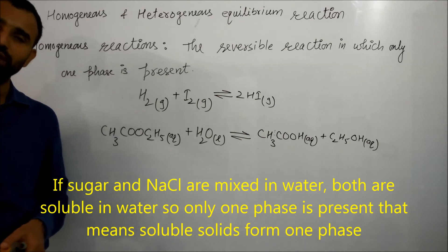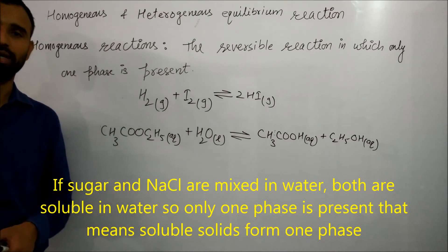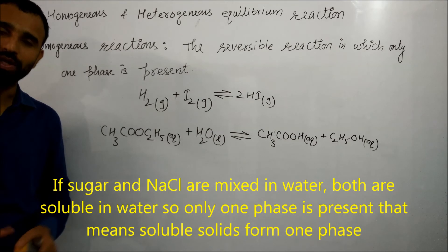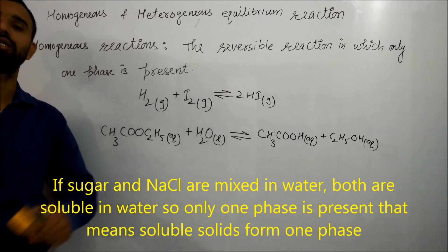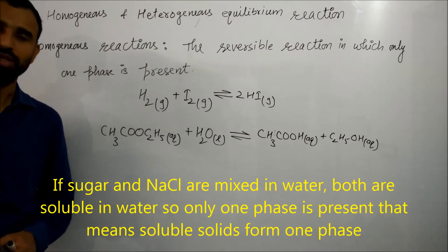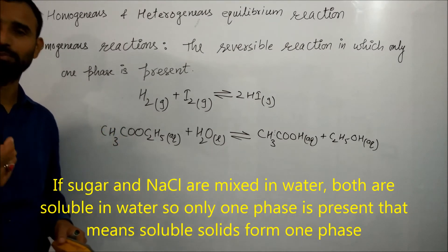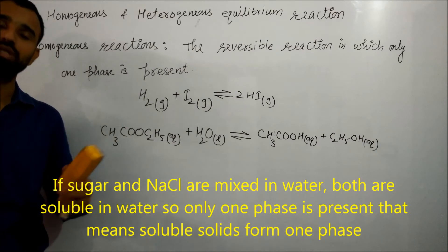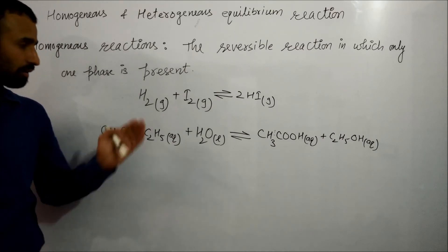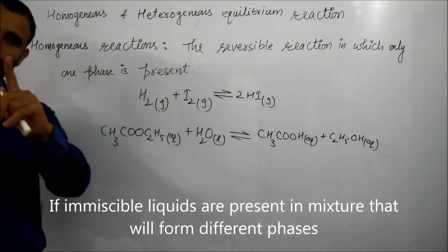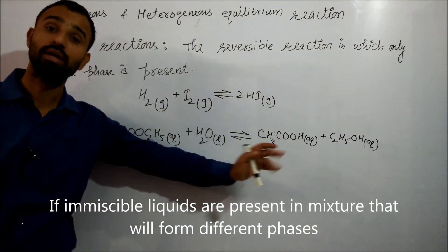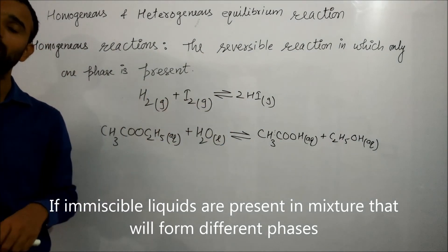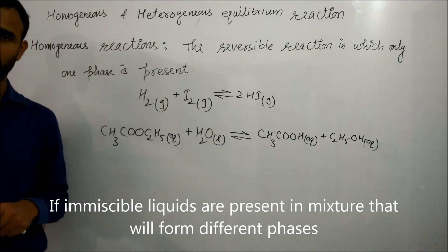Only one phase is formed, and that is why it is a homogeneous reaction. But when we have solids, they are written as solid, meaning they are not mixed together — like sugar and salt without water form a heterogeneous mixture. Two solids always form a heterogeneous mixture. Gases form a homogeneous mixture with only one phase. Soluble liquids dissolved in water also form a homogeneous reaction.